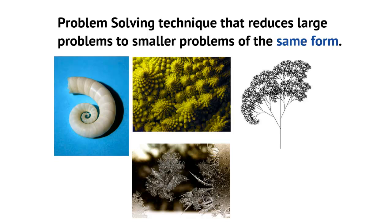I have some pictures here of recursive structures that you may find in nature. We have a picture of a shell, a picture of a cabbage zoomed in on a tree, and some ice crystals. In each one of these structures, we see a larger structure composed of smaller structures that have the same form.